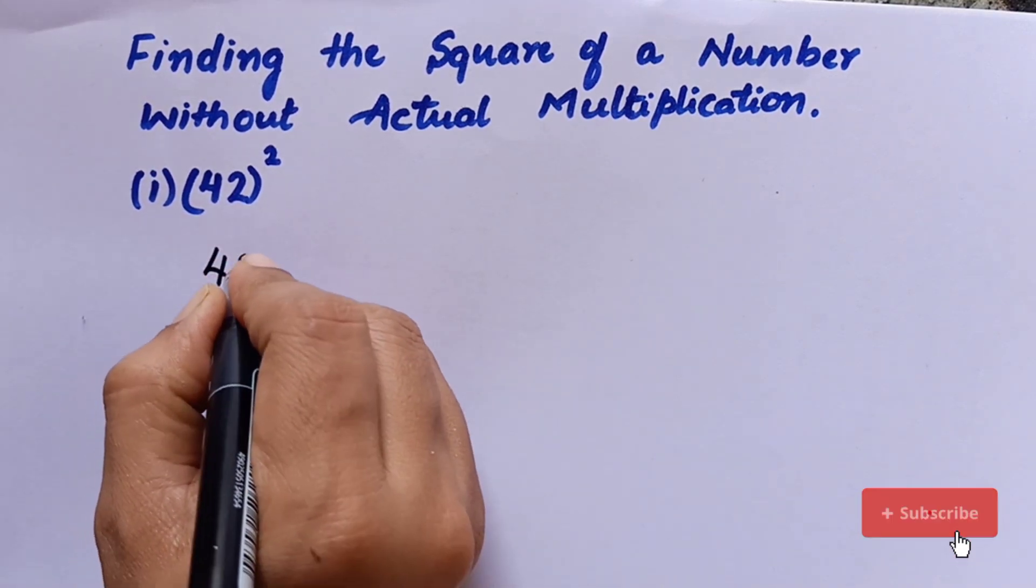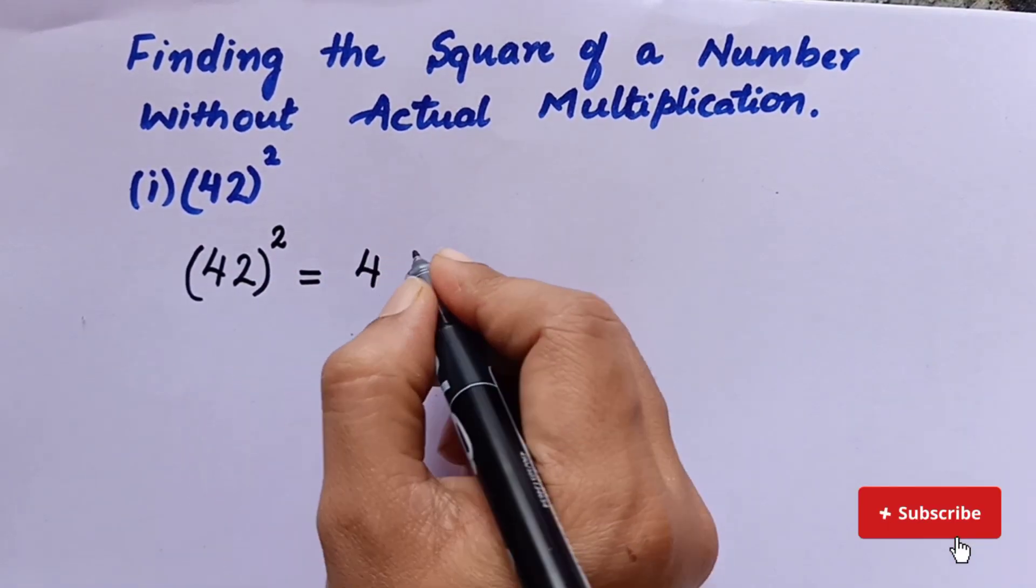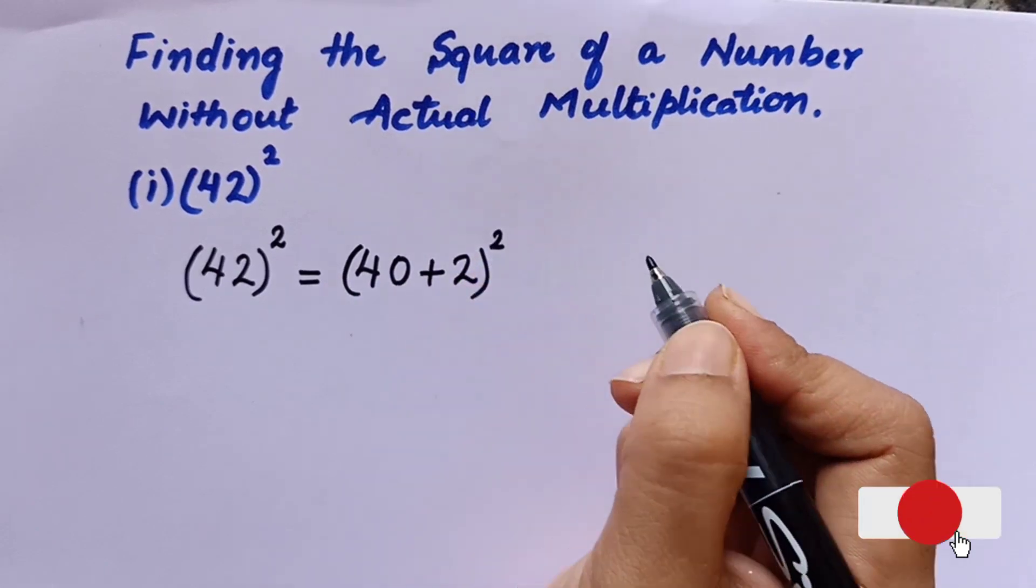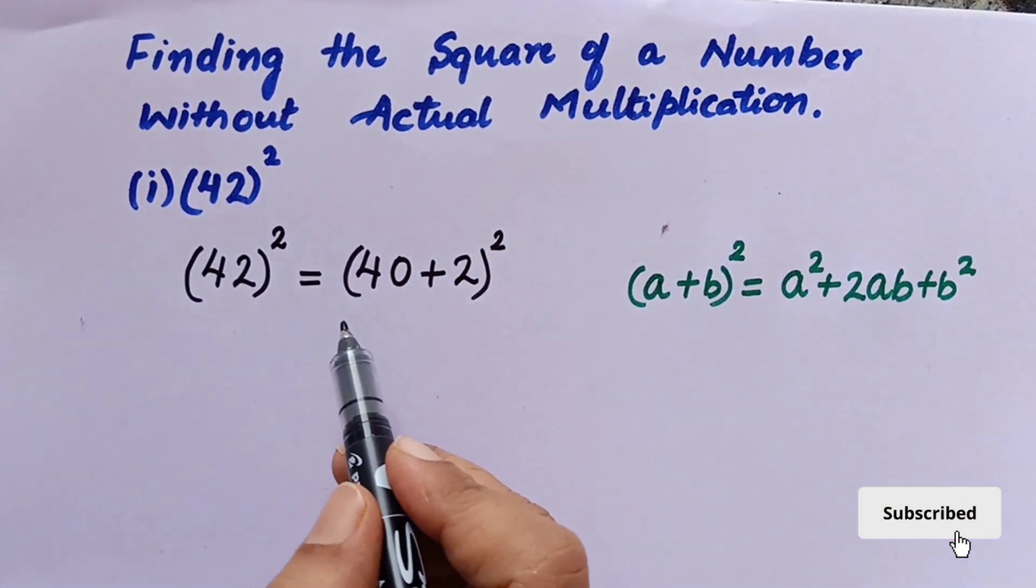Now, 42 squared can be written as (40 + 2) whole squared. This 42 squared can be written as 40 plus 2 whole squared.